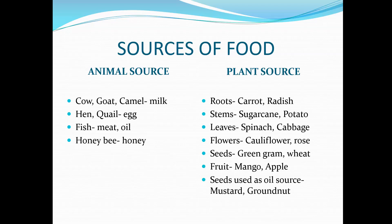Potato, yam, and ginger are modified stems that grow underground. We also eat stems of certain plants such as sugar cane and lotus. Spinach, cabbage, coriander, and fenugreek are examples of edible leaves. Many green leaves can be eaten raw.